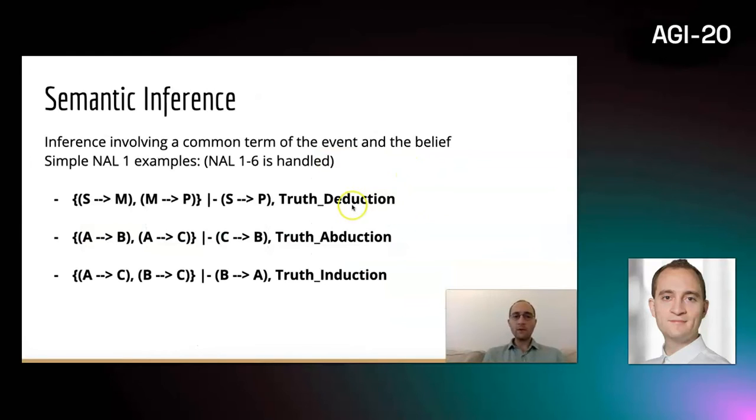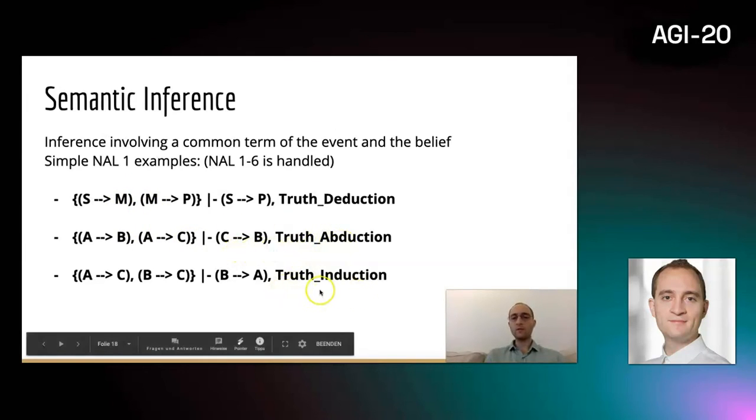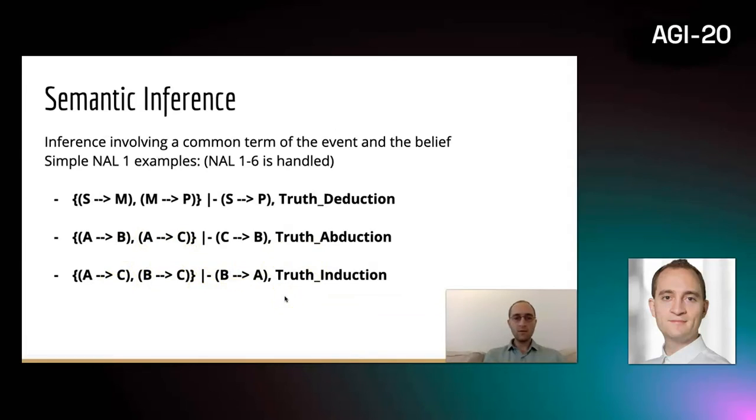For semantic inference, because this one needs the common subterm, there are inference rules. For instance, if S is a M and M is a P, we can conclude that S is a P, which is a form of deduction. Here the M is the common term between the premises. There are also other inference rules for abduction and inductive conclusions, the syllogistic inference rules.